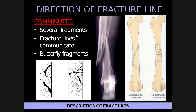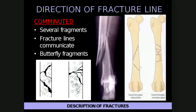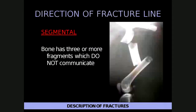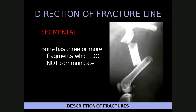A comminuted fracture has several fragments and fracture lines that communicate, all extending from one point. Larger fragments within a comminuted fracture are called butterfly fragments. A segmental fracture consists of three or more fragments that do not communicate with each other — for example, two separate fracture lines resulting in three distinct bone fragments.